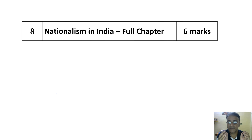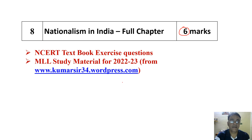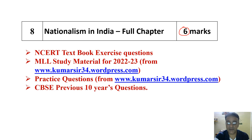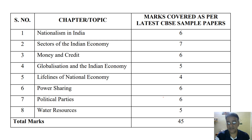The last chapter is Nationalism in India. I have selected only eight chapters from social science which will cover a good amount of marks. This chapter is worth six marks. Students will complete textbook exercise questions, important questions from my minimum level learning study material, practice questions that I will upload, and CBSE previous 10 years questions. If the student completes these eight chapters, they will cover almost 45 marks out of 80.